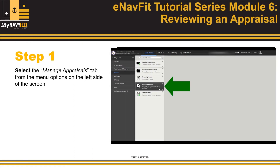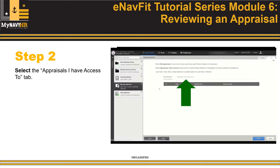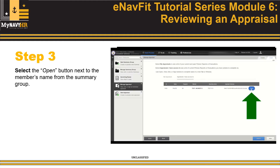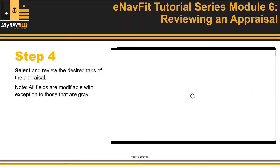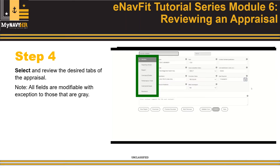Step 1 – Select the Manage Appraisal tab from the menu options on the left side of the screen. Step 2 – Select the Appraisals I have access to tab. Step 3 – Select the Open button next to the member's name from the Summary Group. Step 4 – Select and review the desired tabs of the appraisal. Note that all fields are modifiable with the exception of those that are gray.